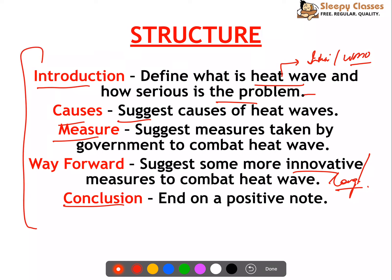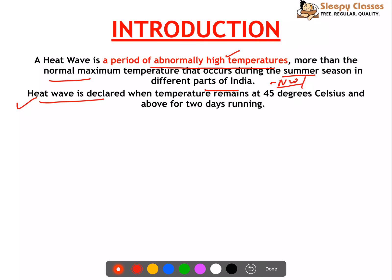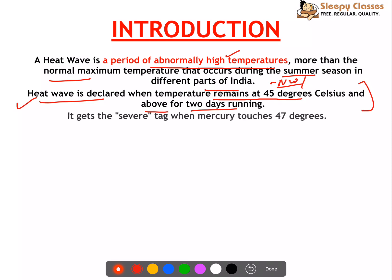A heat wave is a period of abnormally high temperatures - the comparison is with the normal maximum temperature. It occurs during summer in different parts of India, more commonly in north-western parts and southern states like Telangana and Andhra. In India, a heat wave is declared when temperature remains at 45 degrees Celsius and above for 2 consecutive days, and a severe heat wave is declared at even higher thresholds.